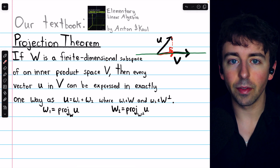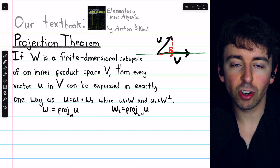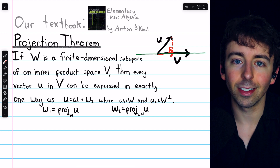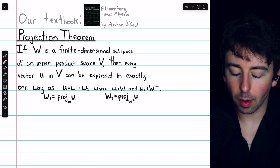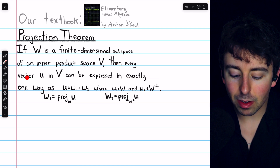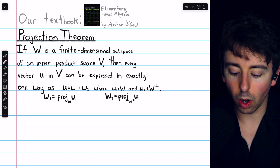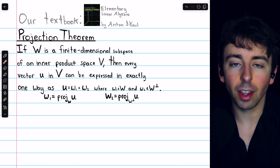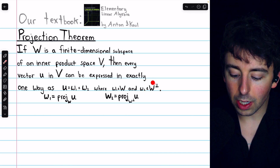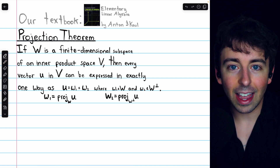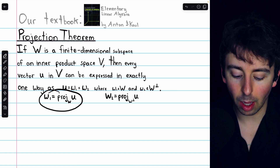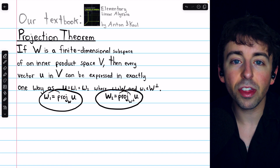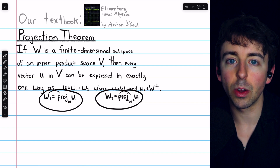Now that we also understand the idea of an orthogonal complement, we're prepared to discuss the projections of vectors onto subspaces in general. Here's the key theorem, which we may call the projection theorem. If w is a finite dimensional subspace of an inner product space v, then every vector u in v can be expressed in exactly one way as w1 plus w2, where w1 is from the subspace w, and w2 is from the orthogonal complement of w. In essence, we split the vector u into two components: its component that's in the subspace w, and its component that is orthogonal to the subspace w, i.e., it's in the orthogonal complement.